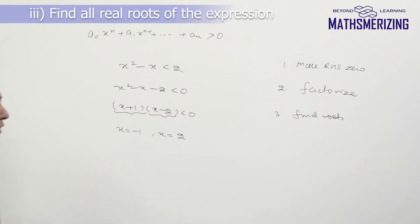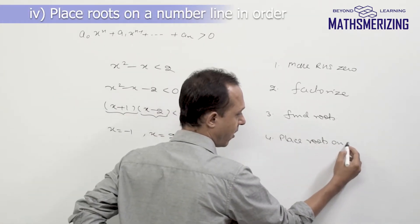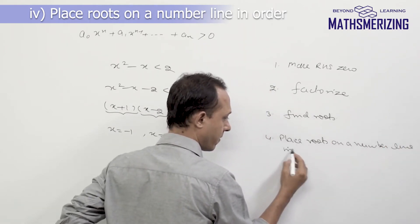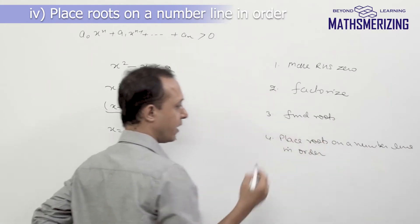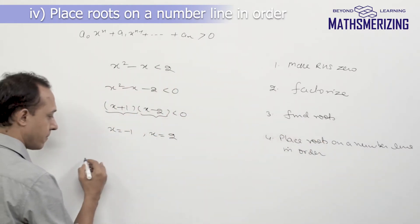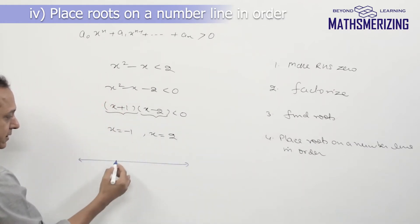Now the fourth step is place roots on a number line in order. So I'll draw a number line and place these two numbers in order. First I'll write -1 and then I'll write 2. So I've placed both roots on a number line.